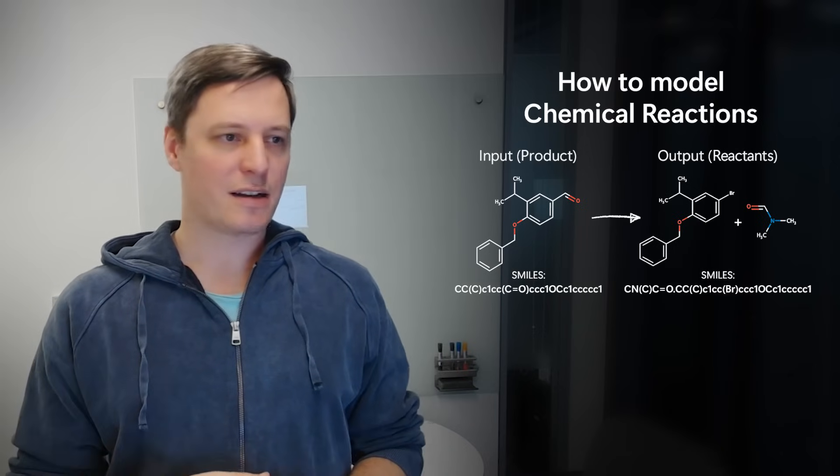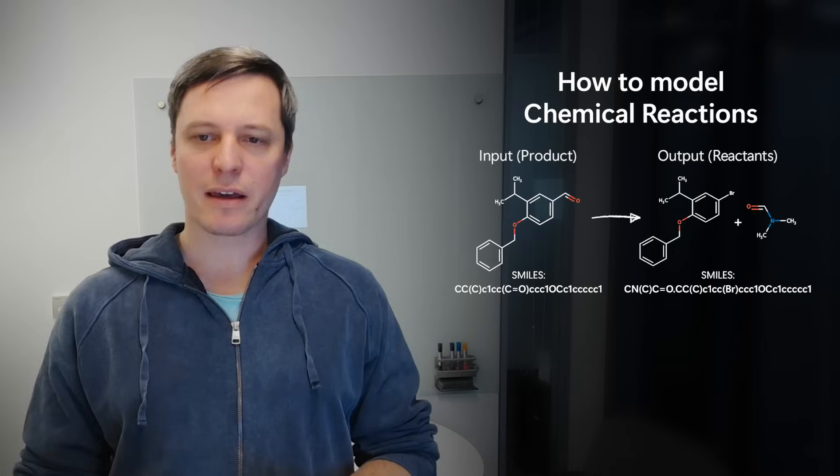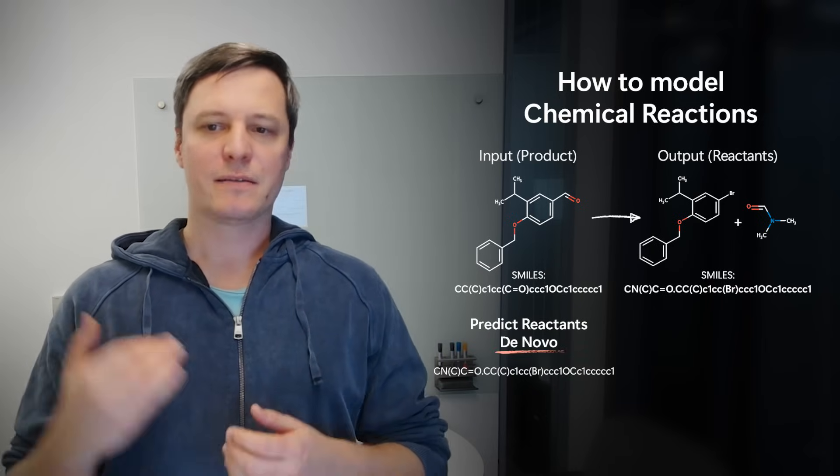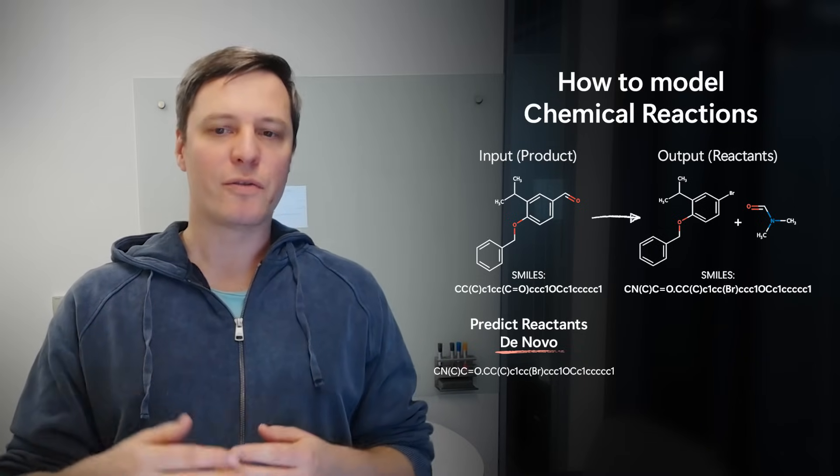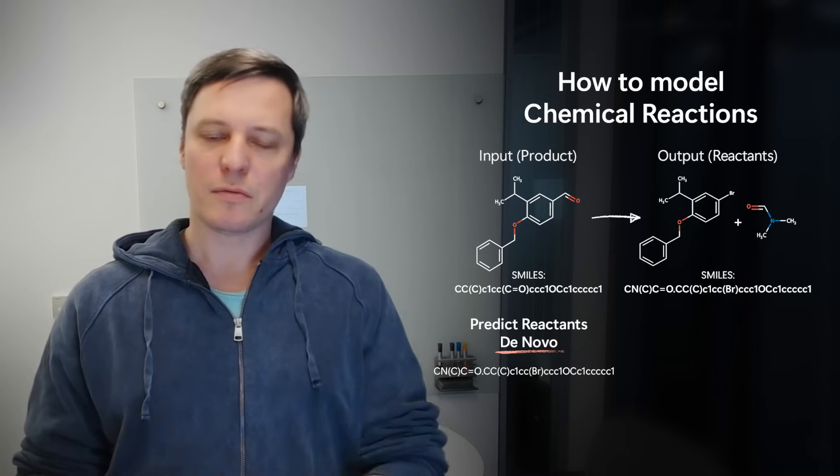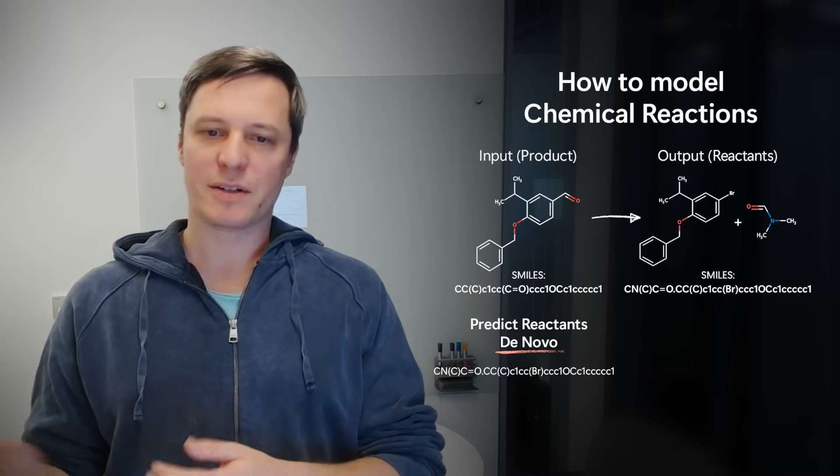Now, given the target product that we want to make, we could either use an autoregressive model to generate the SMILES sequence of the reactants de novo—so in whole, new, token by token. We know about language models, very similar to that.